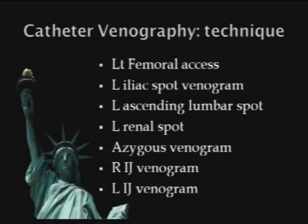The goal of those venograms is not that there's a direct association between May-Thurner and CCSVI, but that having both gives a double whammy making venous outflow much worse, as you've lost collateral flow that gets blood out of the spine. The ascending lumbar venogram doesn't currently help treat the patient but aids understanding, especially in primary progressive cases. He also does a left renal spot to look for narrowing of the renal vein and other drainage collaterals. Then the real work begins with an azygous venogram and bilateral jugular venograms.